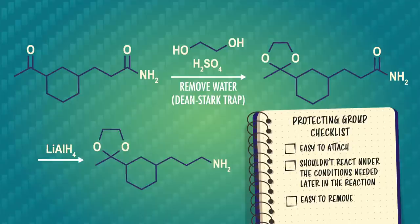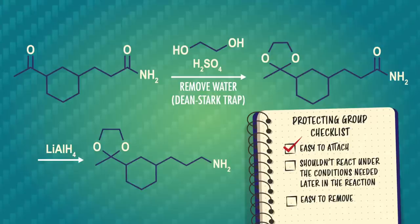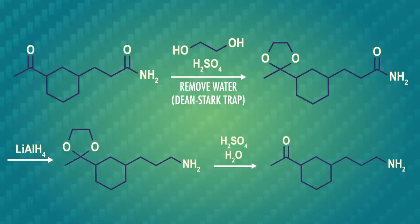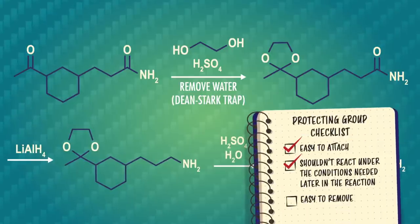So far, so good! Our protecting group was easy to put in place, so that's one check mark. And it hasn't reacted under the reaction conditions used to reduce our amide, so that's another check. All we need to do is add acid to hydrolyze our chemical disguise away, so it checks the final box of being easy to remove too.